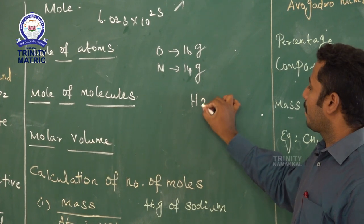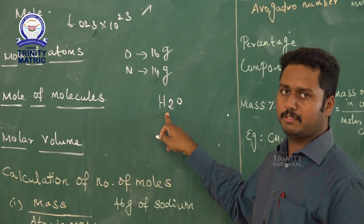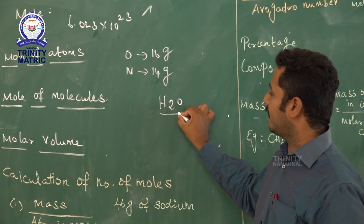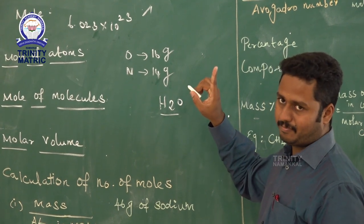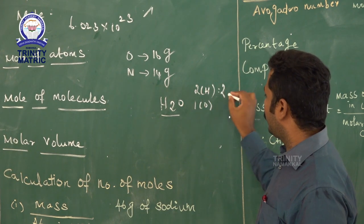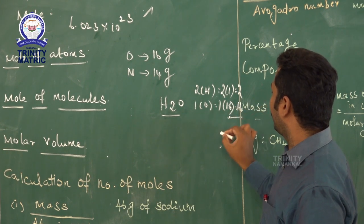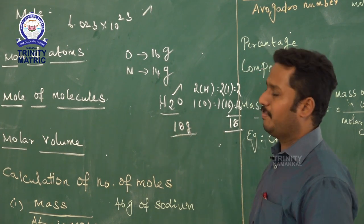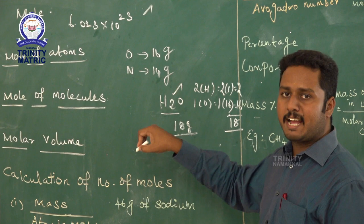For example, H2O is a molecule because it is a combination of hydrogen and oxygen atoms. To calculate the molecular mass of H2O: hydrogen's atomic mass is 1, there are 2 hydrogen atoms, so 2 × 1 = 2; oxygen's atomic mass is 16, there is 1 oxygen, so 1 × 16 = 16; total molecular mass = 18. So the gram molecular mass of water is 18 grams, and 18 grams of water is equal to 1 mole.